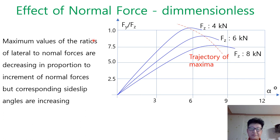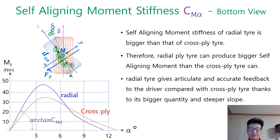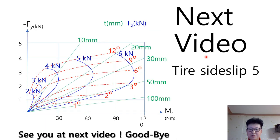If you watched the previous videos, you can easily understand the upcoming content. I previously explained the effect of normal force on lateral force, and the differences between radial and cross ply tires regarding lateral force, self-aligning moment, pneumatic trail, and steering feedback. The next video will be tire side slip part 5, covering the g-g diagram and the speed effect on lateral force. See you in the next video!